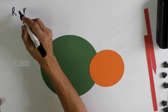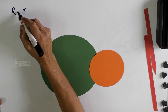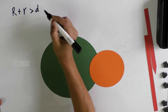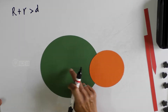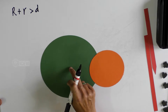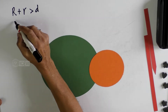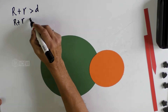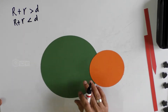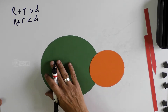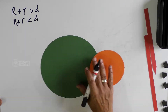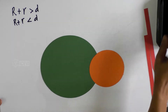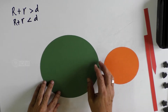Now suppose we get the formula: capital R plus small r is greater than D, where D is the distance between the centers of the circles. Similarly, if capital R plus small r is less than D, we need to find out whether the circles are intersecting or non-intersecting. Let us demonstrate this now.